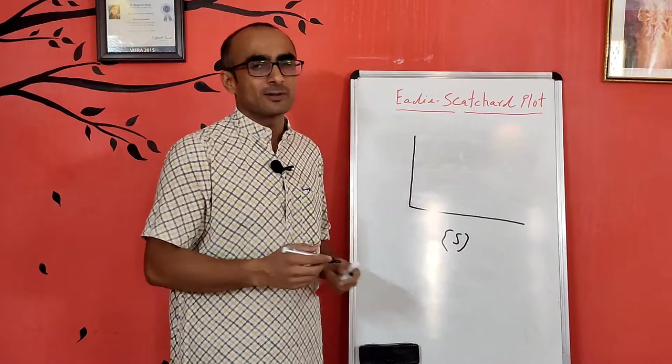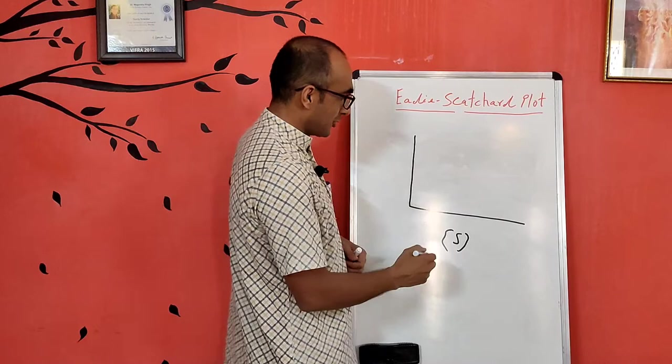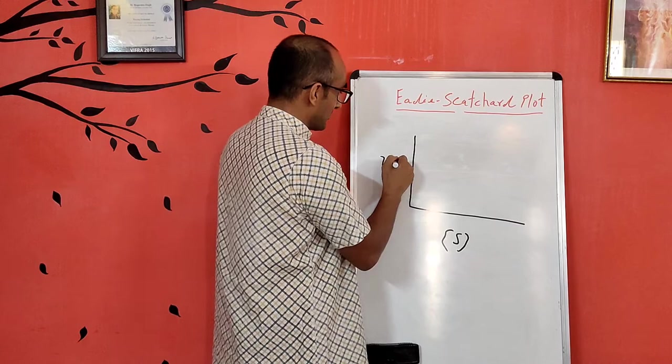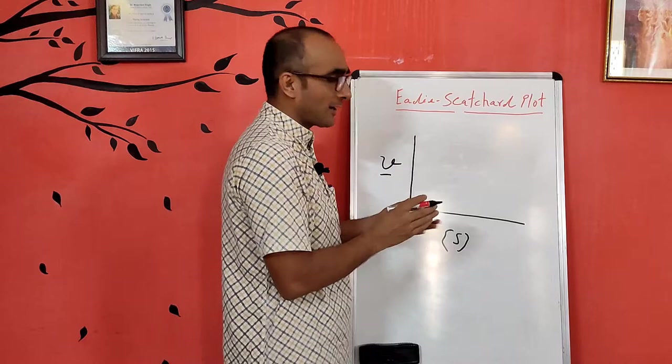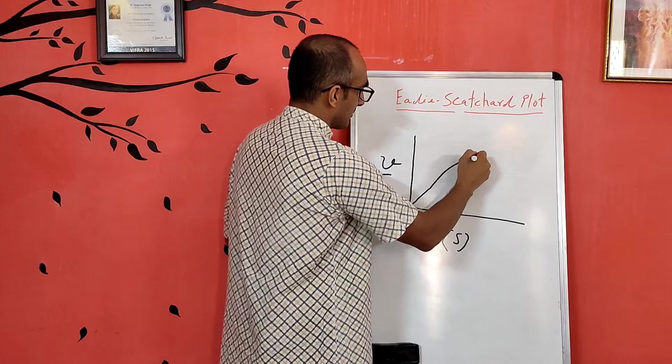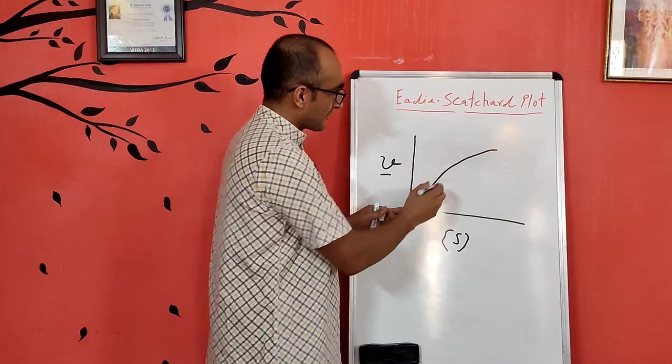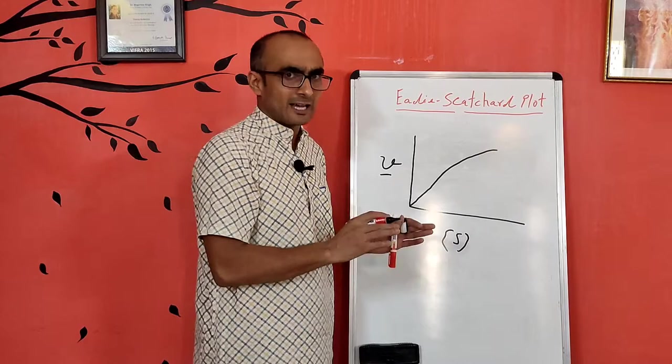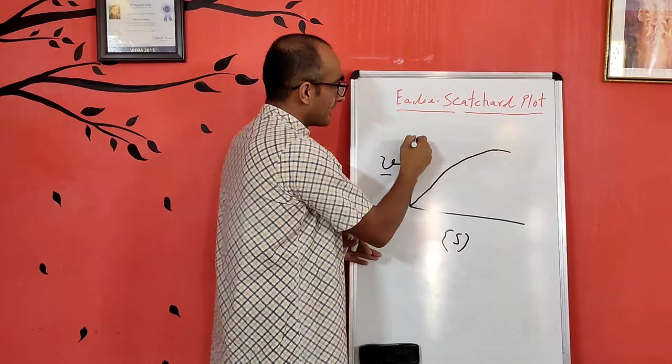You plot substrate concentration on the x-axis and rate of reaction on the y-axis. The rate of reaction tells you at what speed the reaction is progressing. When you plot this, it follows a Michaelis-Menten graph, which is hyperbolic in nature — initially a straight line, but after a certain substrate concentration the active sites of the enzyme get saturated and the rate becomes almost constant.